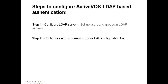ActiveVos basically supports Java Authentication and Authorization Service, so it is a JAAS-based application. It provides a facility for application users to configure their own security mechanism to work with ActiveVos. These options can be LDAP-based, JDBC-based, or file-based authentication.